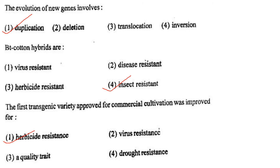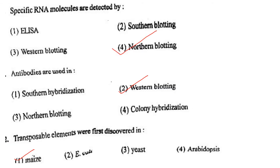Next one: The first transgenic variety approved for commercial cultivation was improved for option 1, herbicide resistance; option 2, virus resistance; option 3, quality trait; option 4, drought resistance. Answer is option 1: herbicide resistance.